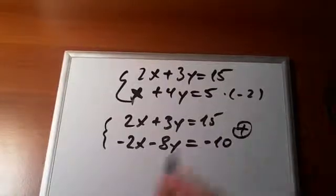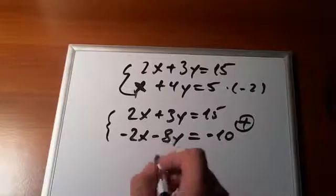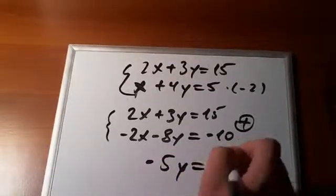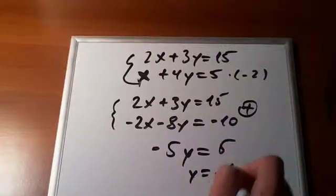Now, I'll just add them. I'll get rid of x terms. 3y minus 8y minus 5y is equal to 5. And y is equal to minus 1.